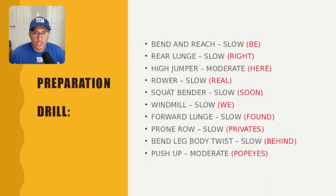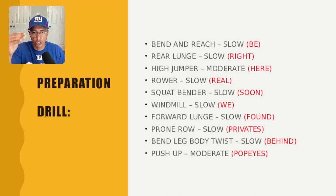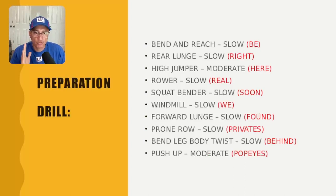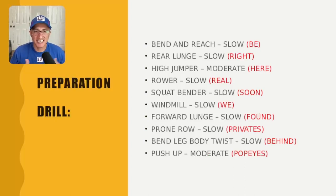You start off with the preparation drill, which has 10 exercises. Some of them are slow and two of them — the high jumper and the push-up — are moderate, meaning your count is going to be faster. The slow ones have a subtle pause. The 10 exercises are: bend and reach, rear lunge, high jumper, rower, squat bender, windmill, forward lunge, prone row, bent leg body twist, and push-up.